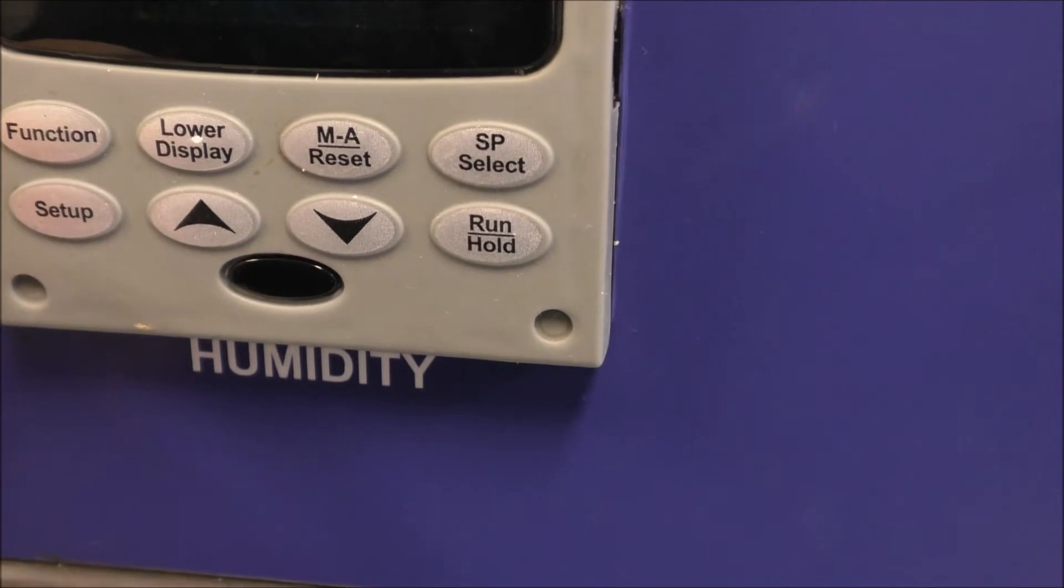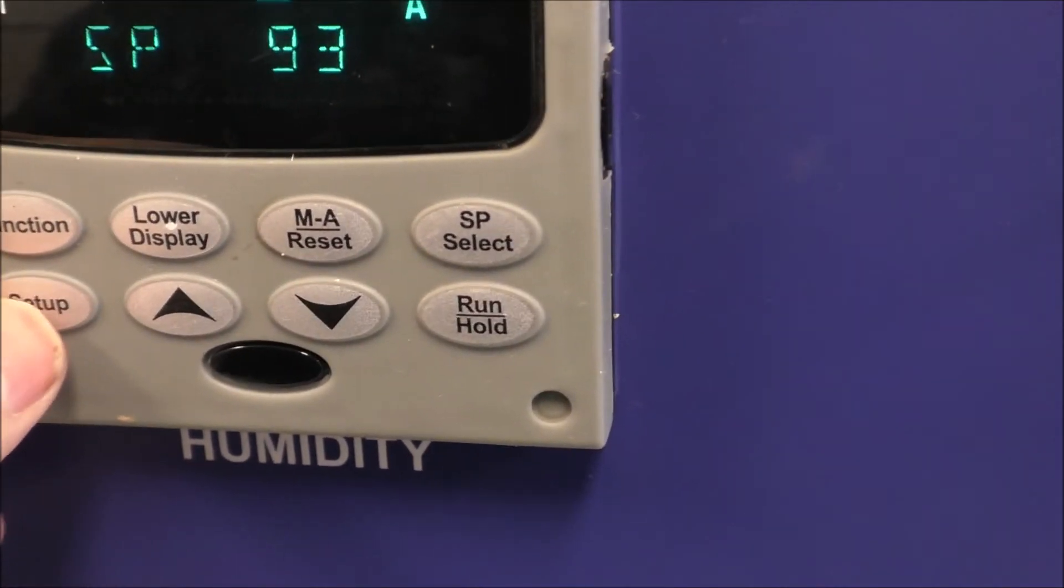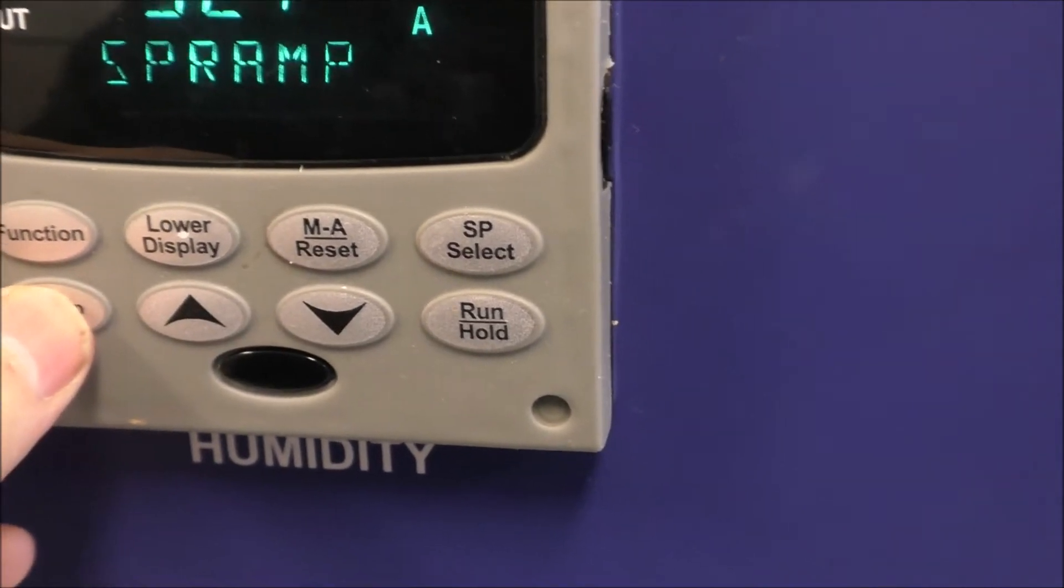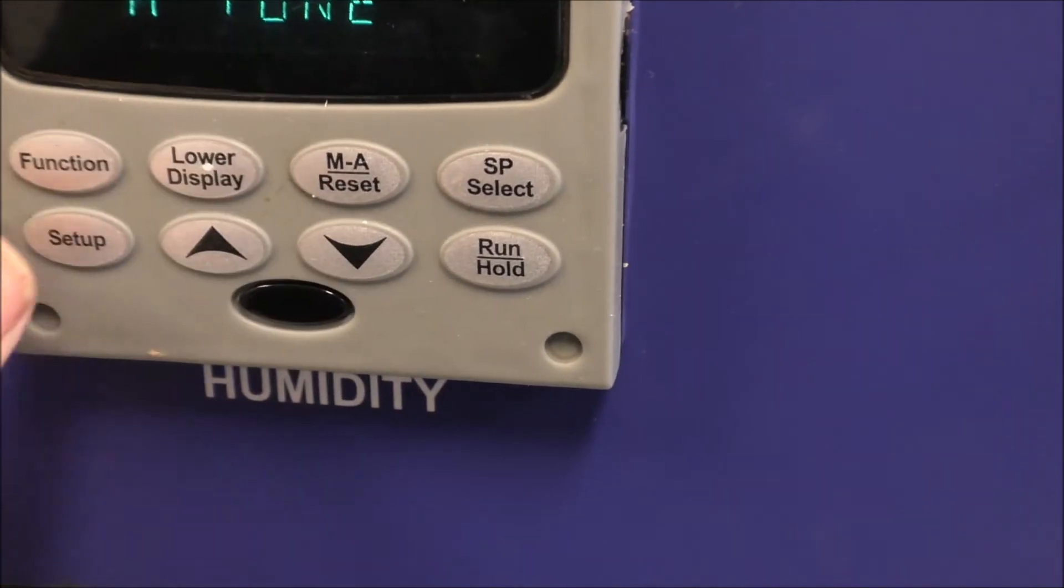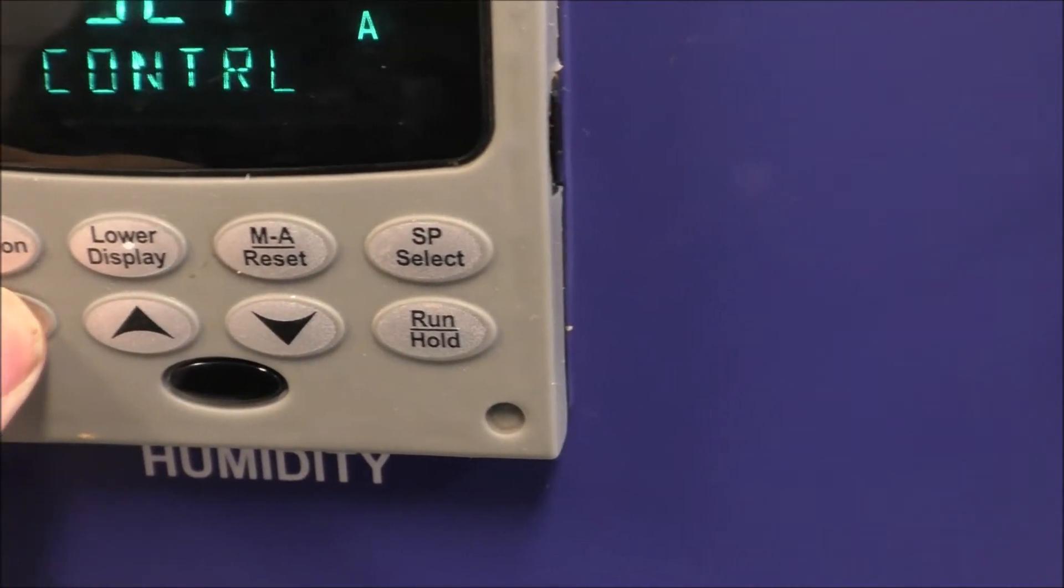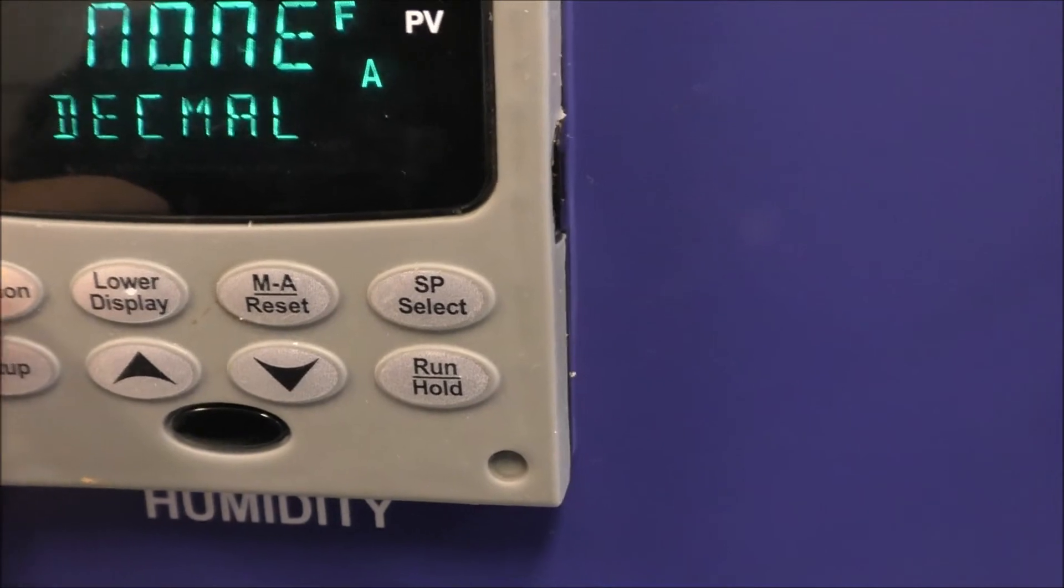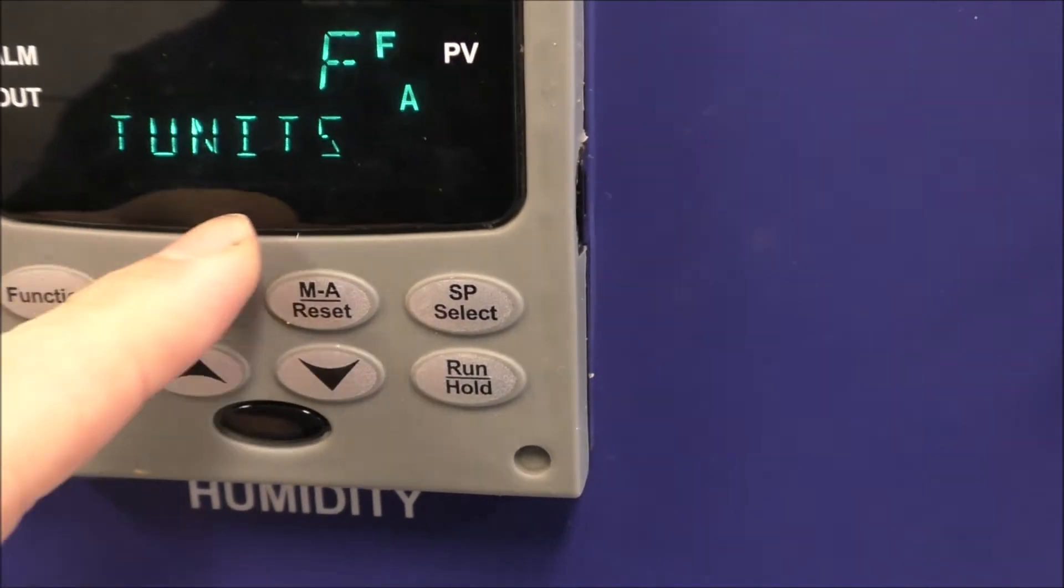Hit function again and then hit lower display. Now you'll need to hit setup until the lower display says display, and then hit function until it gets to units.